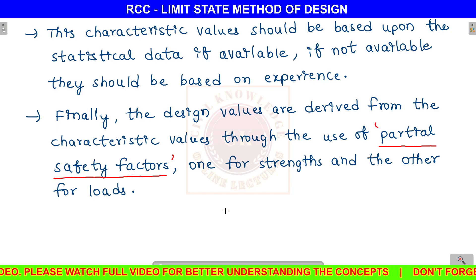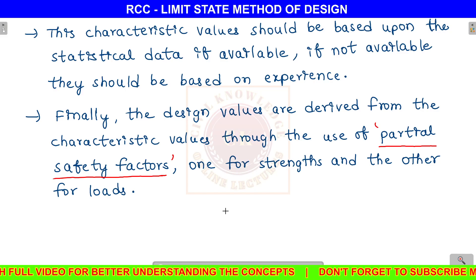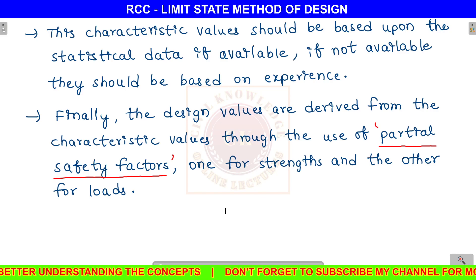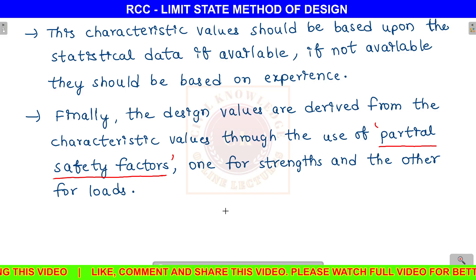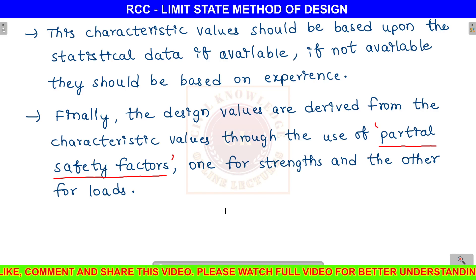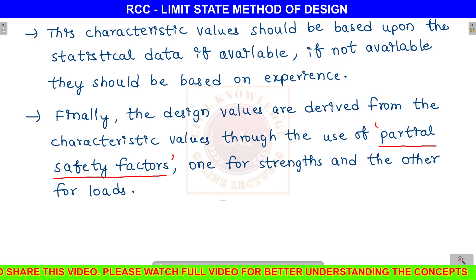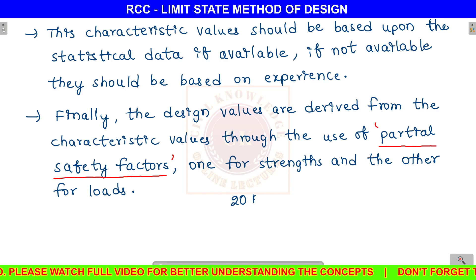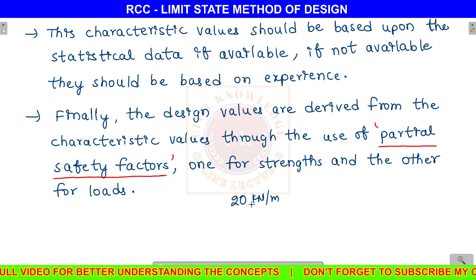For characteristic loads — which are applied loads and external loads — the characteristic load is defined such that throughout the structure's lifespan, there is a 95% chance that the load will not be exceeded. For example, if a beam has a UDL of 20 kN/m including live load and dead load, that is the characteristic load.